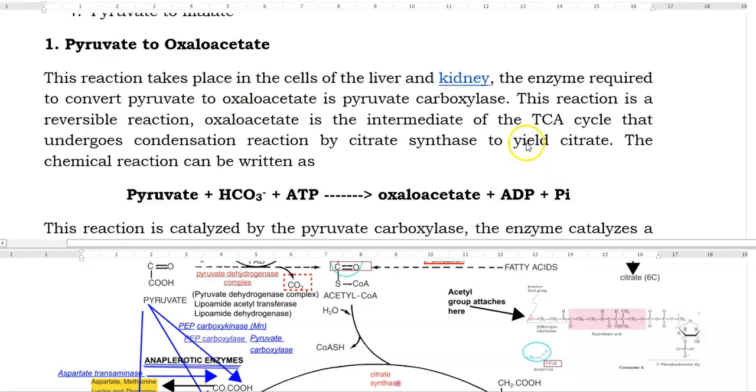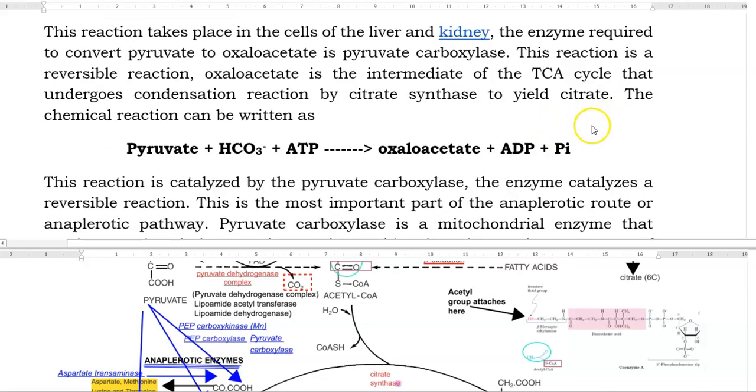First one is pyruvate to oxaloacetate. This reaction takes place in the cells of liver as well as in the kidney. The enzyme required to convert pyruvate to oxaloacetate is pyruvate carboxylase. This reaction is a reversible reaction. Oxaloacetate serves as the intermediate of the TCA cycle. It undergoes a condensation reaction by citrate synthase enzyme in order to yield citrate molecule. The chemical reaction can be written as follows.